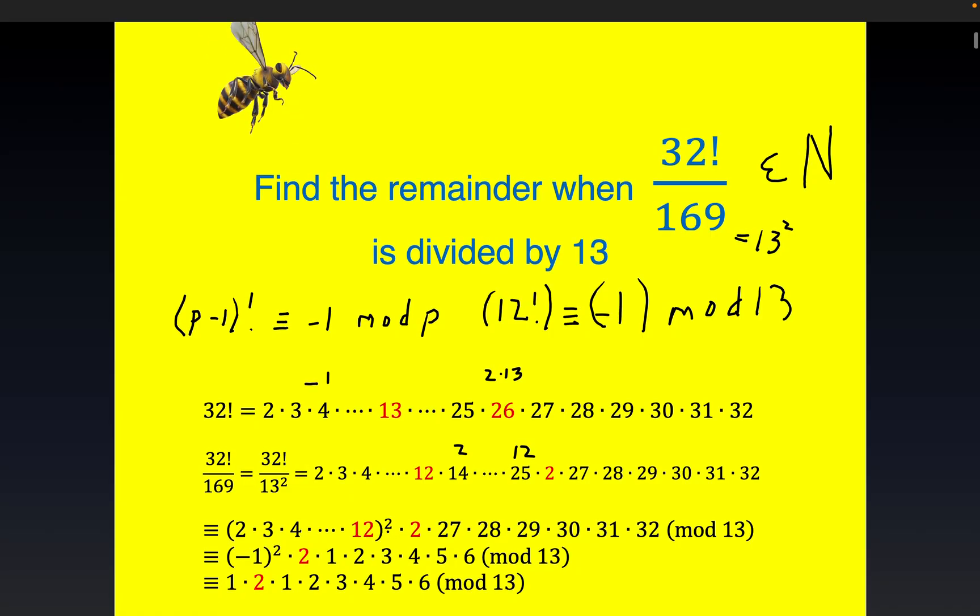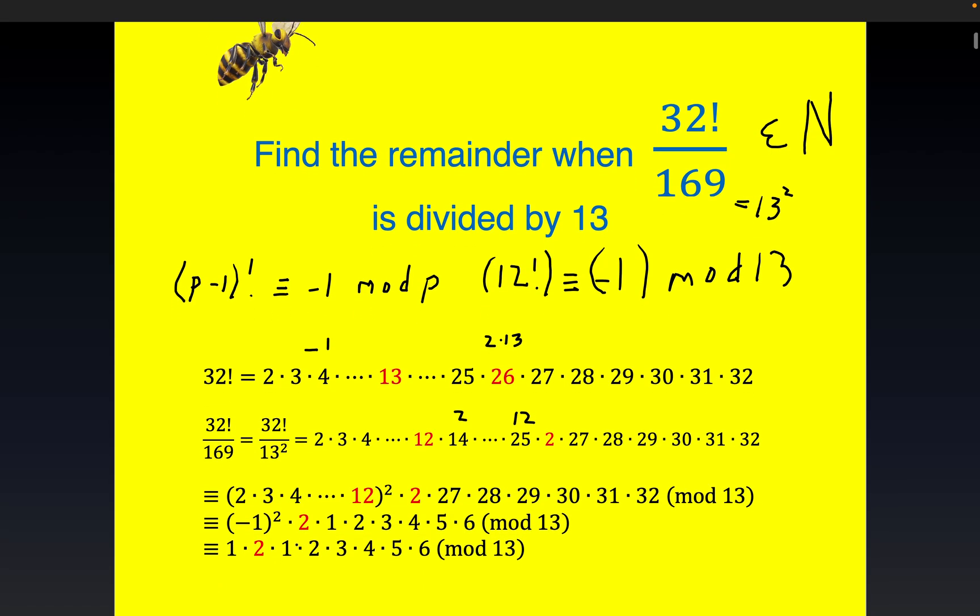So now that leads to an immense simplification here because you just have minus 1 squared here. Squared follows from the definition of Wilson's theorem. So we have minus 1 squared, and we get rid of a lot of terms. It's pretty nice.